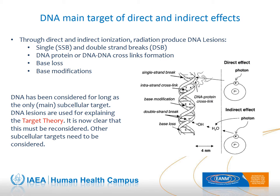Regarding radionuclide therapy, DNA is the main target of direct and indirect effects. Through this direct and indirect ionization, radiation may produce single or double strand breaks, DNA-protein or DNA-DNA cross-link formation, base loss, and base modifications. Although DNA has long been considered the only main subcellular target, it is now clear that this must be reconsidered. Other subcellular targets like proteins, fatty acids, etc. also need to be considered.